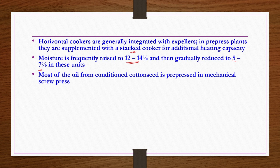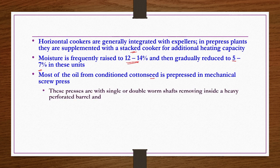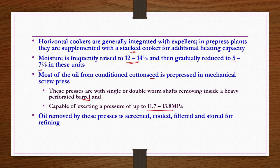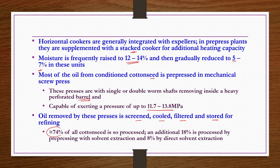Most cotton seed oil is pre-pressed in a mechanical screw press. These presses have single or double worm shafts revolving inside a heavy perforated barrel, capable of exerting pressure up to 11.7 to 13.8 megapascals. Oil removed by these presses is screened, cooled, filtered and stored for refining. Approximately 74 percent of all cotton seed is processed by mechanical methods, 18 percent by pre-pressing with solvent extraction, and 8 percent by direct solvent extraction.